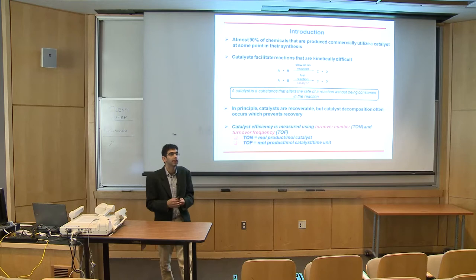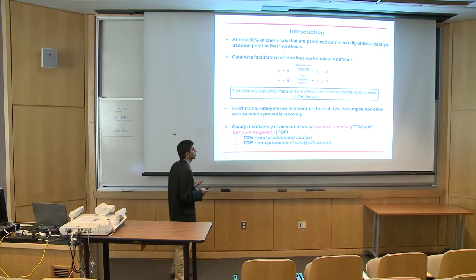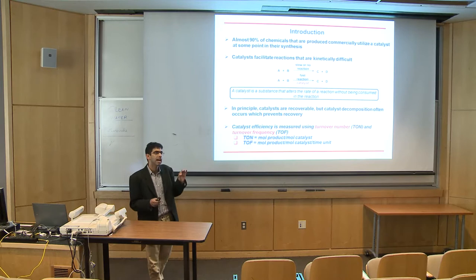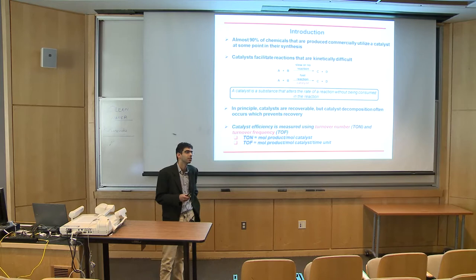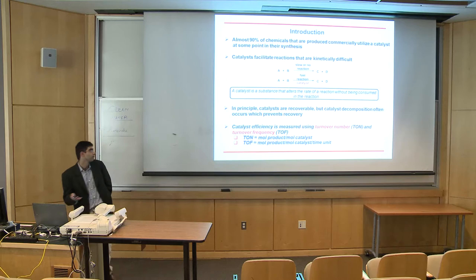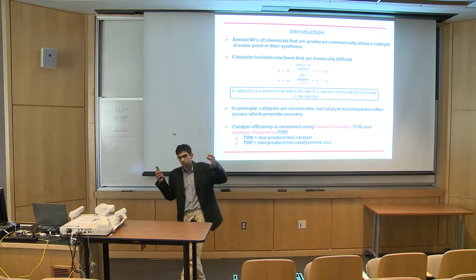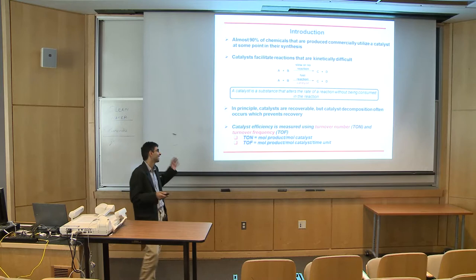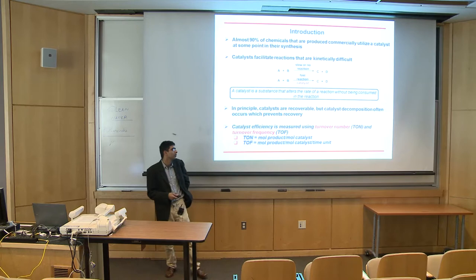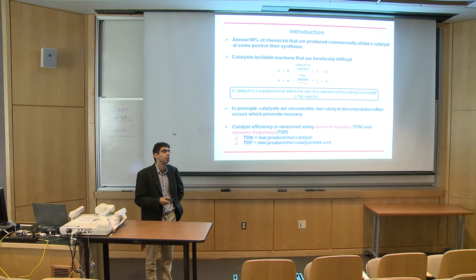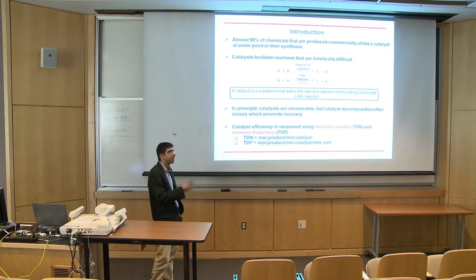We need a metric to define whether or not a catalyst is good, at least in the homogeneous community. The metrics we typically use are turnover number and turnover frequency. The turnover number defines how many moles of product you produce per mole of catalyst. If I run my reaction with 1 mole percent catalyst loading, I will end up with a maximum of 100 turnovers. We also want to know how fast our catalyst operates — turnover frequency adds a per-time unit to the expression.